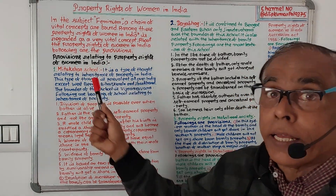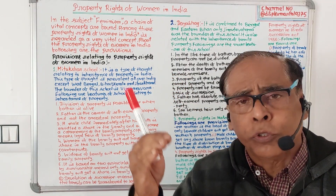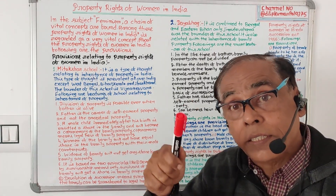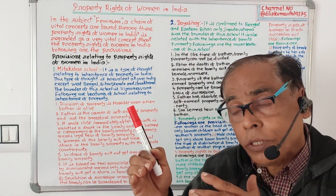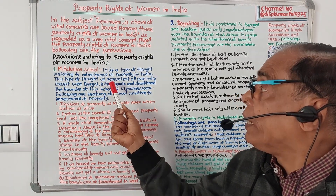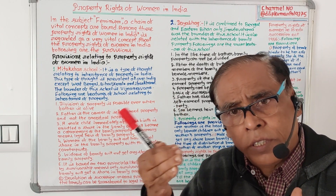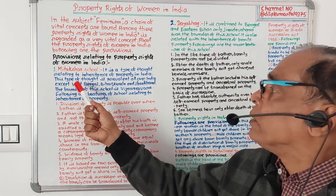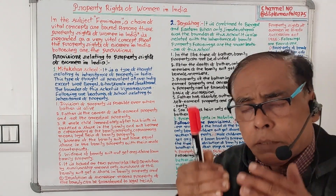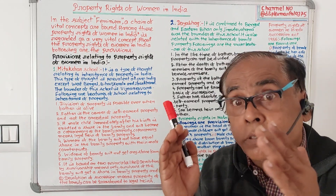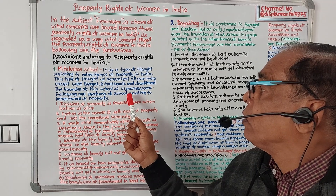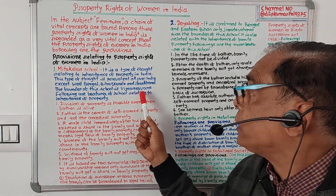One school is the Mitakshara school. Mitakshara school is a school which relates with property rights of women. It is a type of thought relating to inheritance of property in India, prevalent all over India except West Bengal, Bihar, Kerala and Jharkhand. The founder of this school is Vijnanesvara.